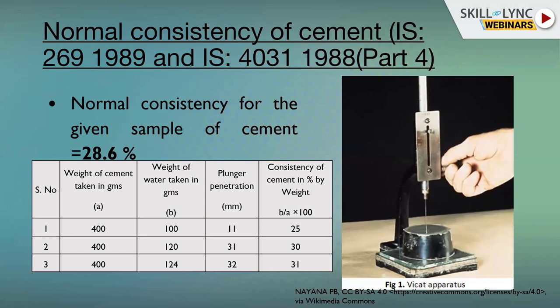The test uses a Vicat apparatus with a plunger of approximately 10mm diameter. For example, 400g of cement with 100g of water is tested — the plunger penetration depth is recorded. Across three trials, consistency values may be 25%, 30%, and 31%. In engineering standards, three samples are always taken and averaged before proceeding with design.